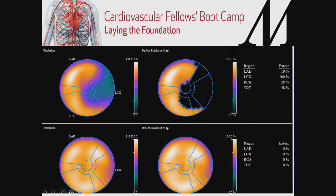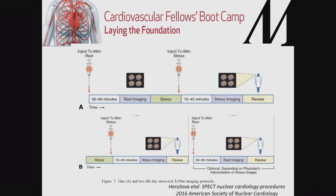In the polar map, all three coronary artery distributions are displayed — LAD, left circumflex, and RCA. The heart is assessed in 16 to 17 segments, similar to echo, evaluating whether tracer uptake is normal or abnormal in each. A large defect in the left circumflex territory, for example, indicates ischemia in that territory.